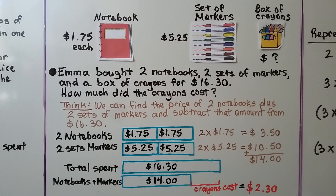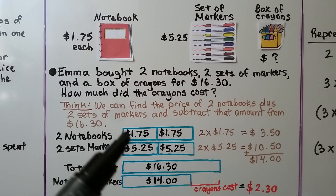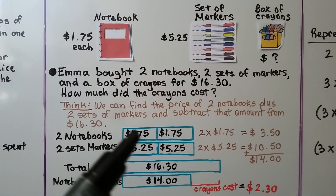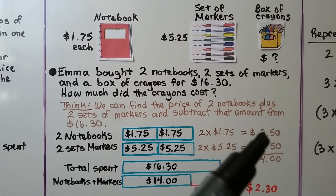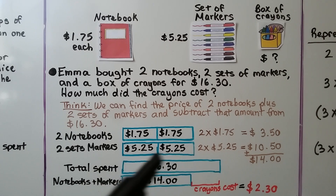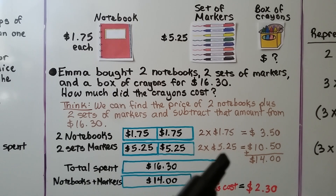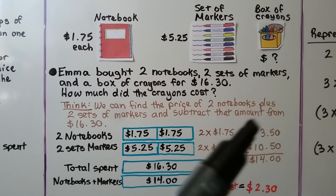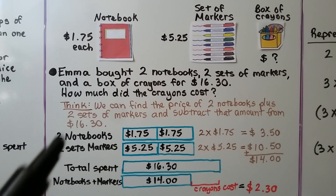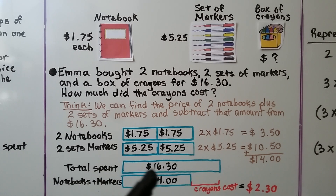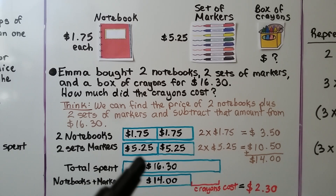We can find the price of 2 notebooks plus 2 sets of markers and subtract that from the $16.30 she spent total. 2 notebooks at $1.75 each: we have 2 boxes, and 2 times $1.75 is $3.50. 2 sets of markers at $5.25 each: we have 2 boxes, and 2 times $5.25 is $10.50. Adding them together gives $14. We know she spent $16.30, so we draw a long bar for that, a bracket for the $14 portion, and subtract to get the difference of $2.30. The crayons cost $2.30.